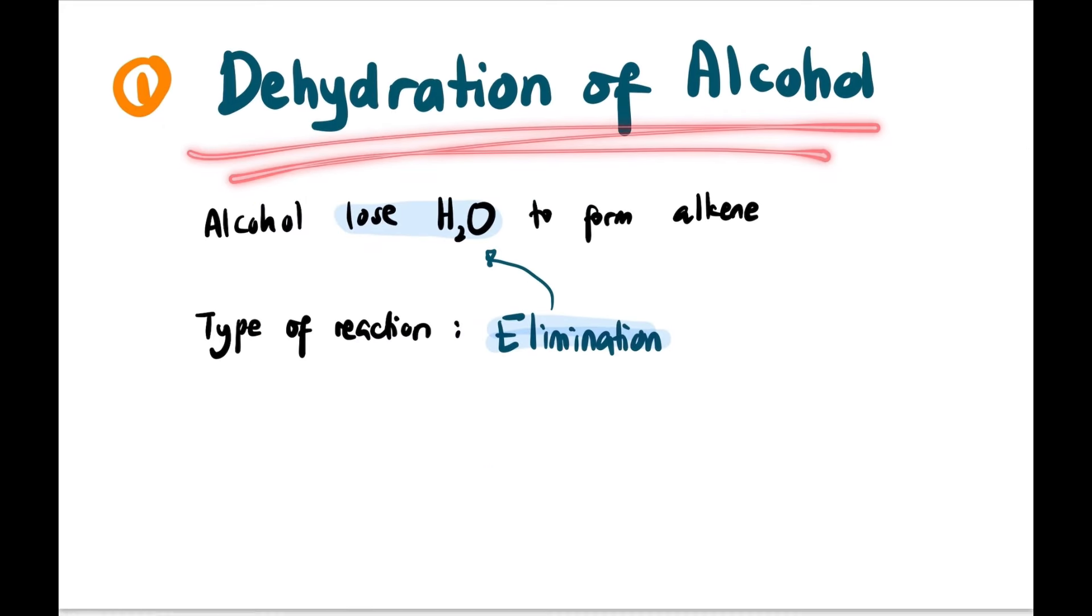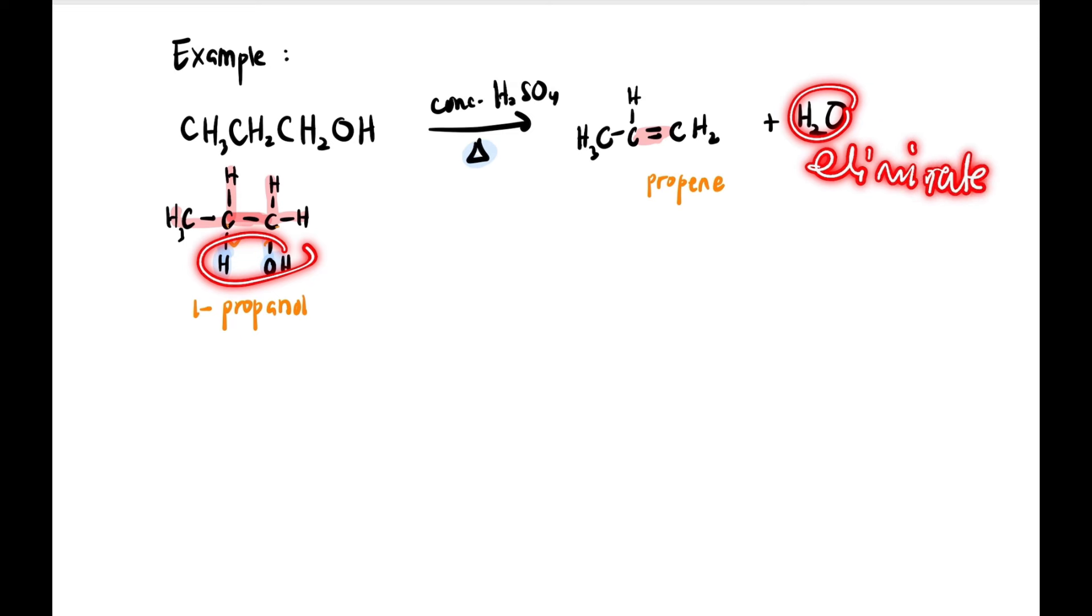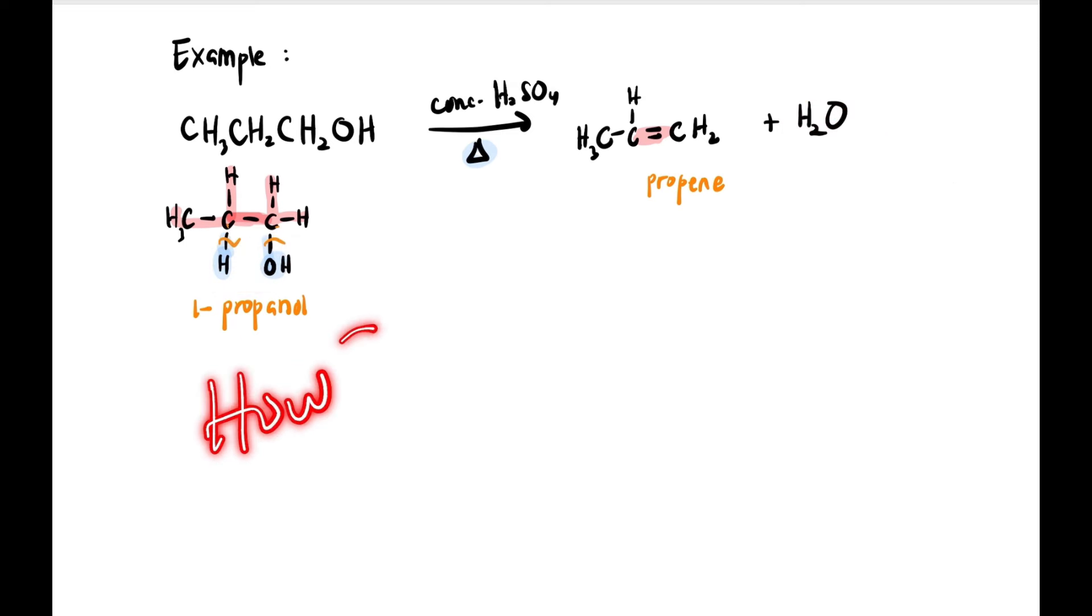Let's recap dehydration of alcohol. Basically, we eliminate H2O from an alcohol to produce an alkene. For example, we have 1-propanol here with OH at the end. We use concentrated H2SO4 and then produce propene. We remove H and OH - H2O is eliminated.